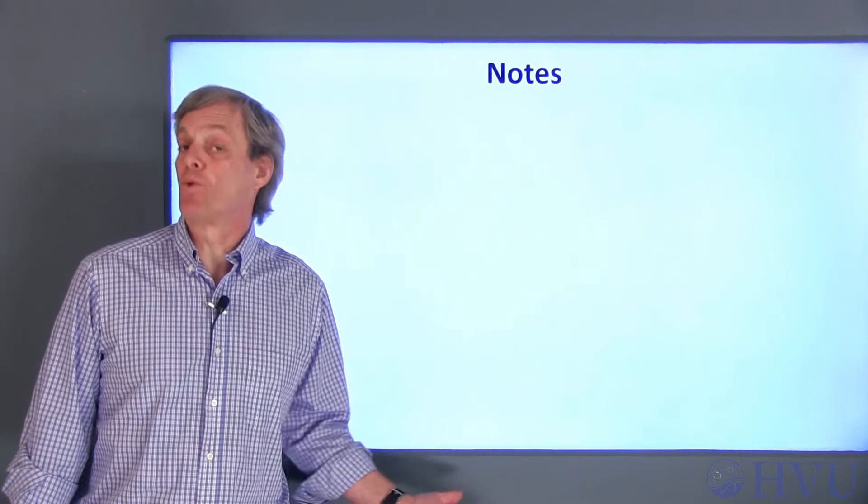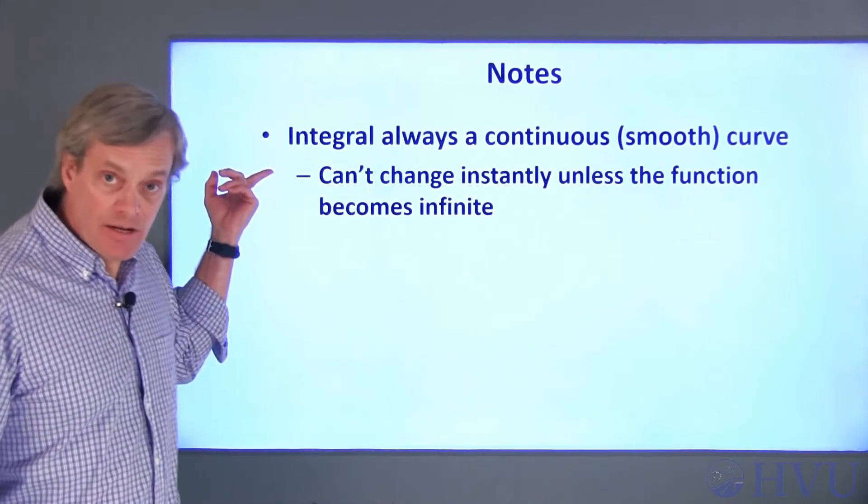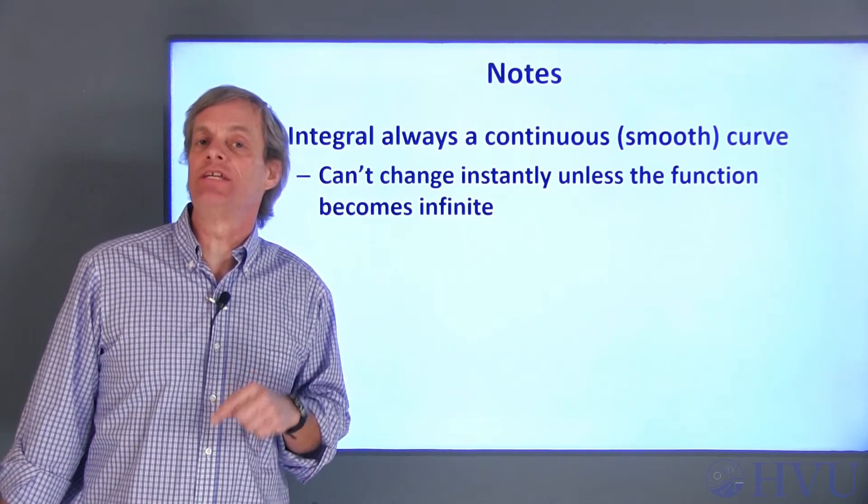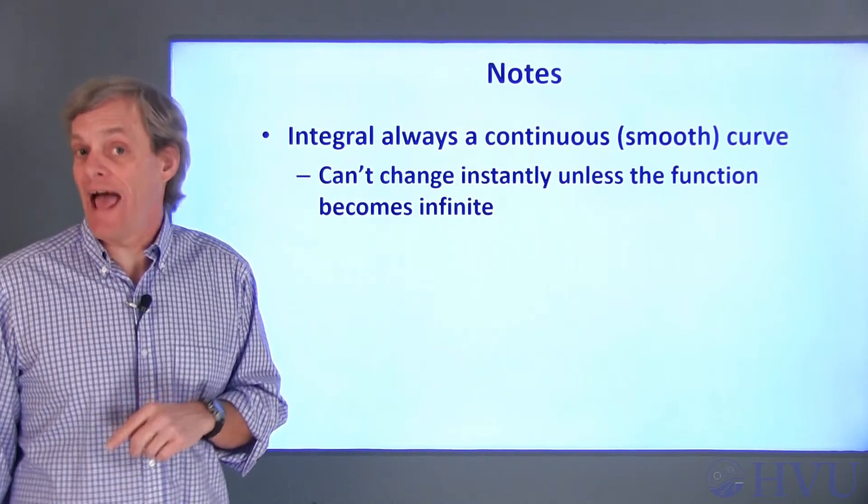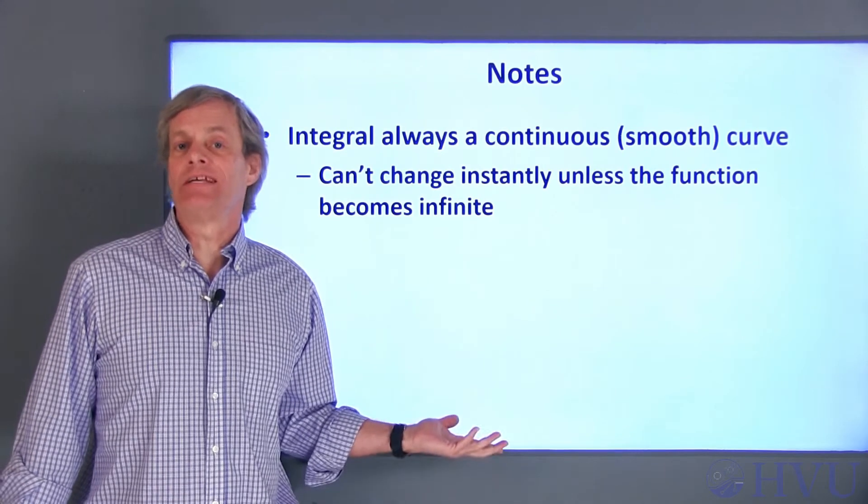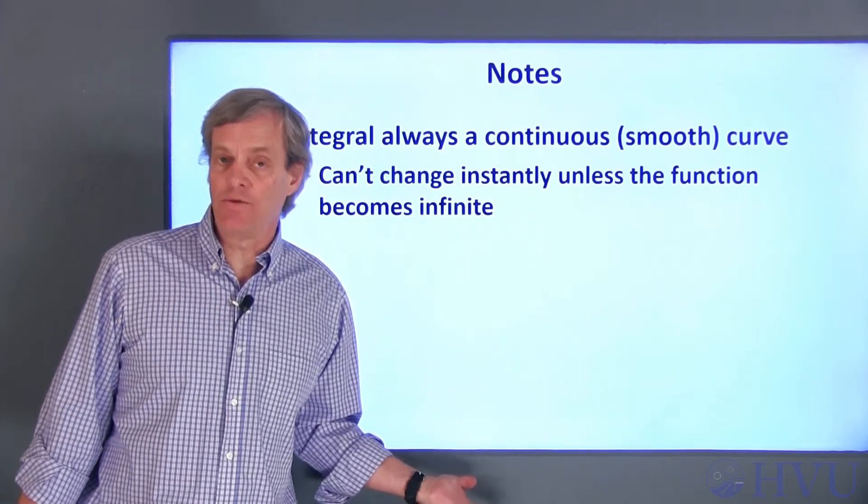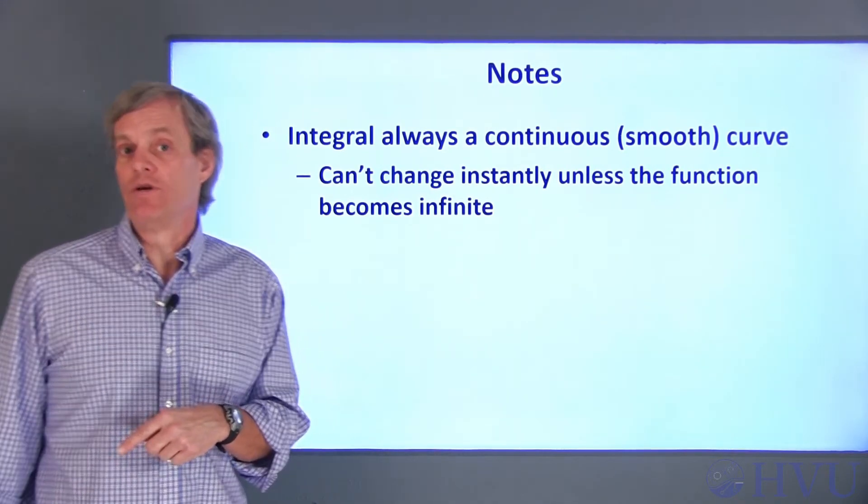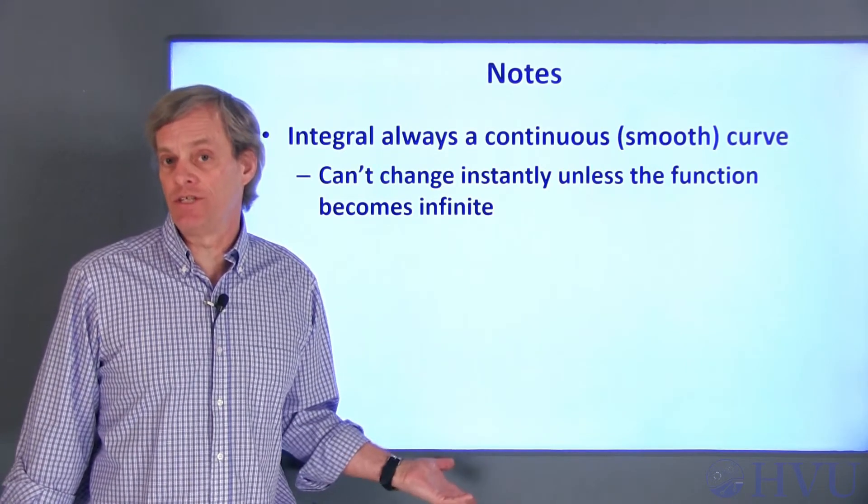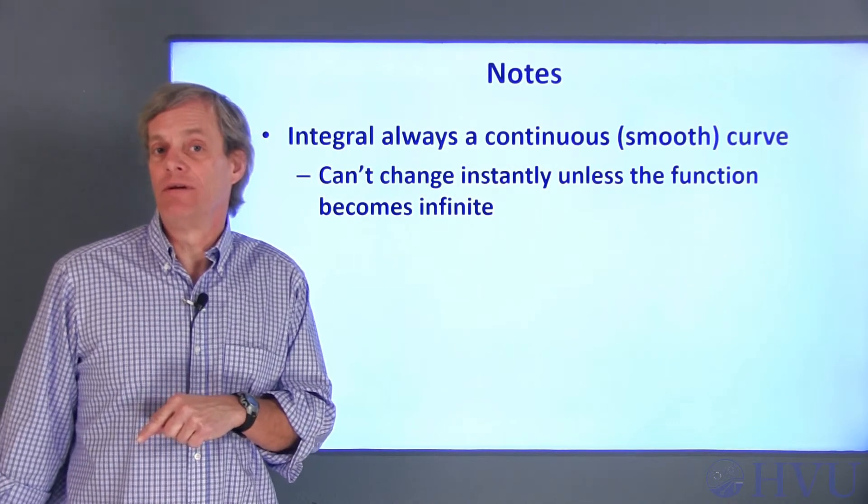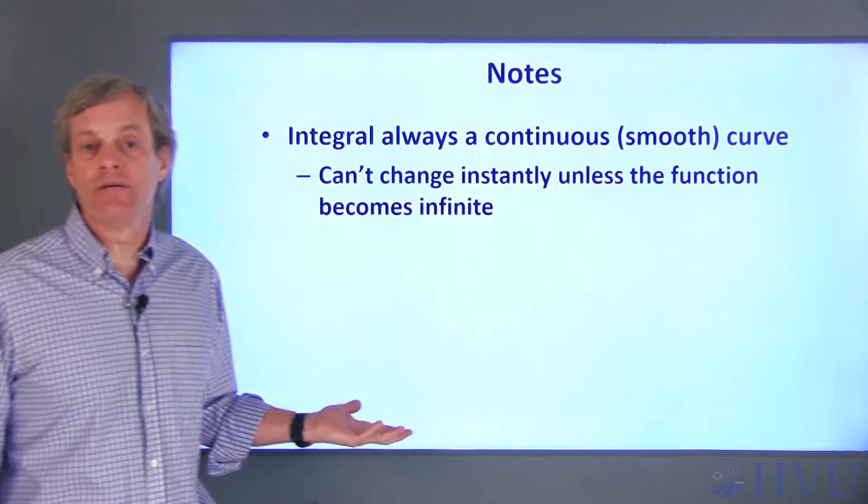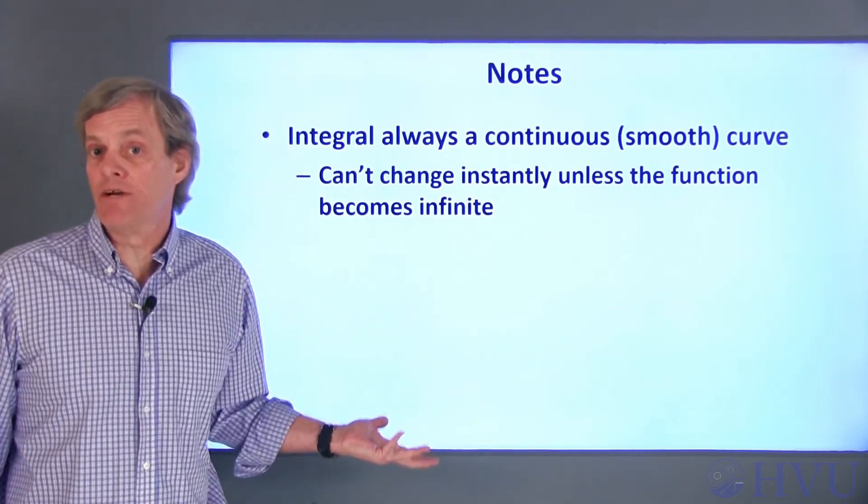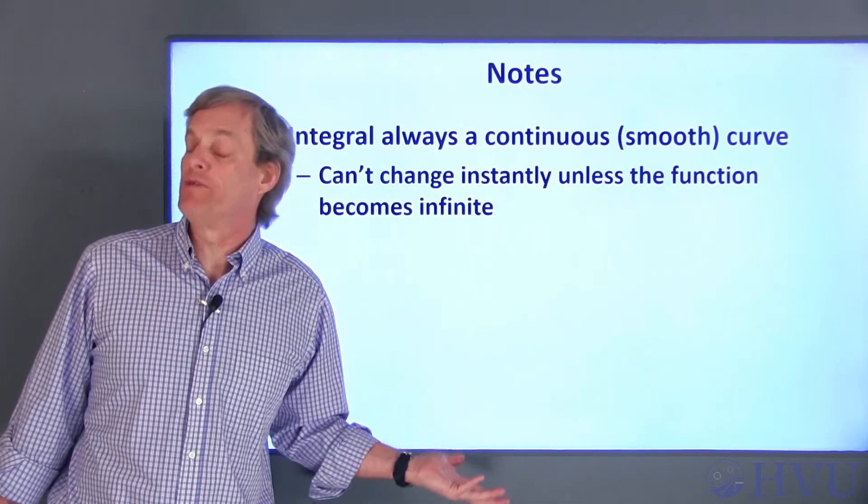Finally, I want to make a couple of important points about integrals. Since an integral is essentially the area under a curve between two points, an integral can't change instantly at any given point, unless the value of the function at that point becomes infinite. This means that an integral will always be a smooth or continuous function for any physically possible signal. This is the opposite of what we saw for derivatives. Derivatives tended to amplify abrupt changes in a function as when we took the derivative of measured data. Taking the integral of a function results in something that's smoother and changes more slowly than the original function. So integrating measured data doesn't result in the problems we saw when we differentiated data.